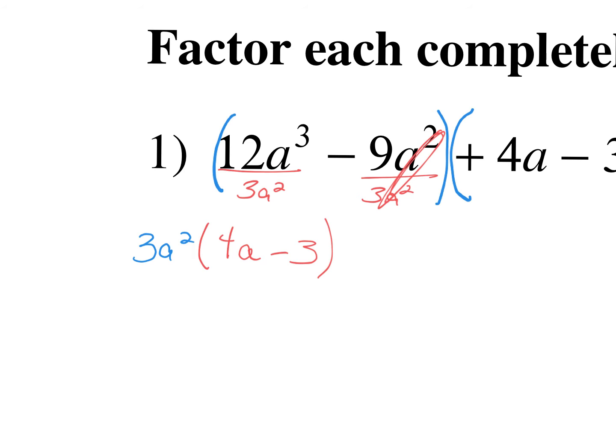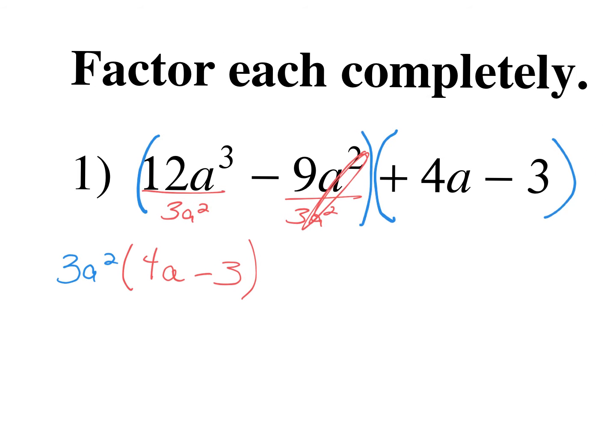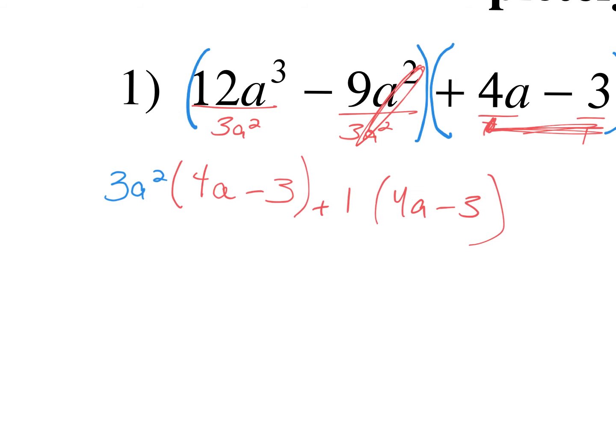Now the second parentheses already looks the same, but you have to take something out — you need a placeholder. You can't just leave it. What can I take out of 4a minus 3? You can't take out anything, so I divide out a 1. If I divide out 1, I pull it out in front. Do you guys notice now how I have two parentheses that are exactly the same? That is our new GCF.